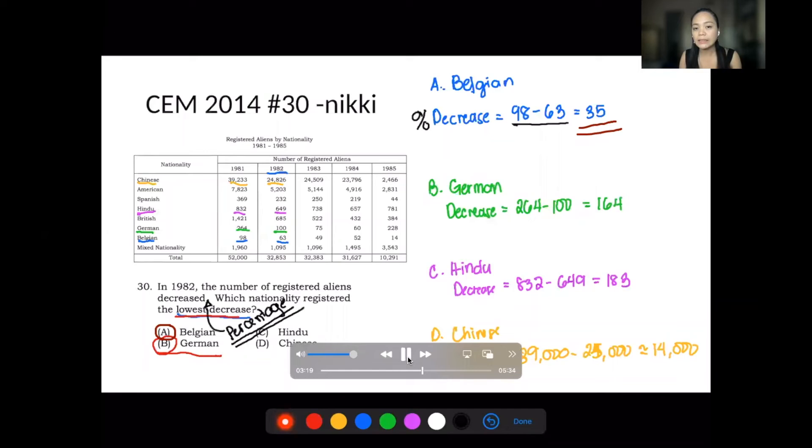They ask for the percentage decrease, so that's the normal question. To do that, let's get the percentage decrease by dividing it from the previous value. For Belgium, that's 35 divided by 98. For German, that's 164 divided by 264 from the previous value, and that came from 1981.